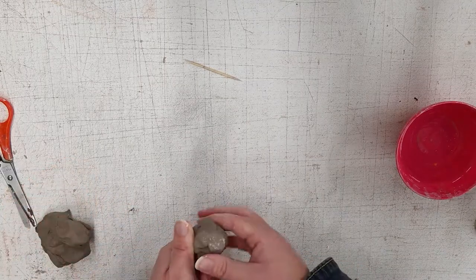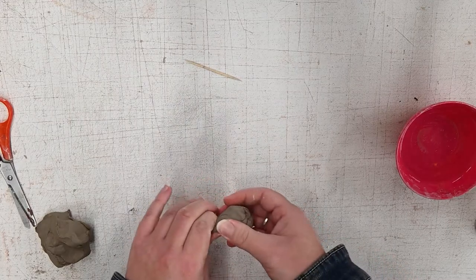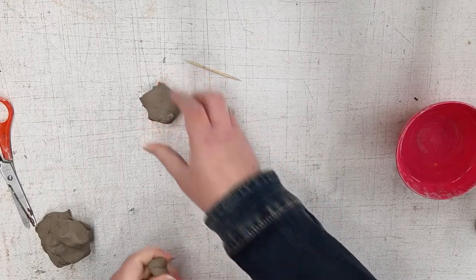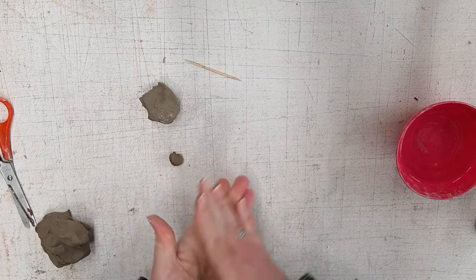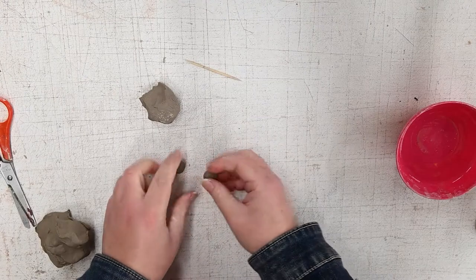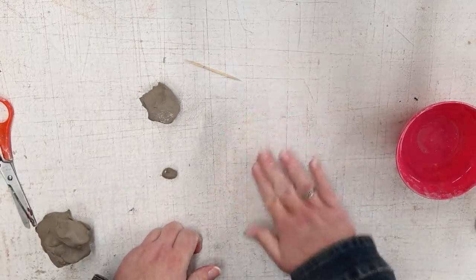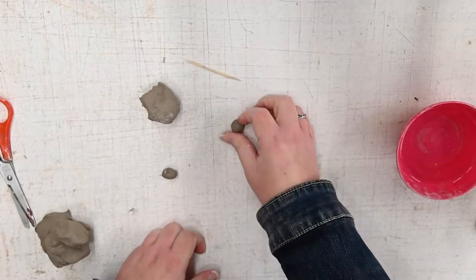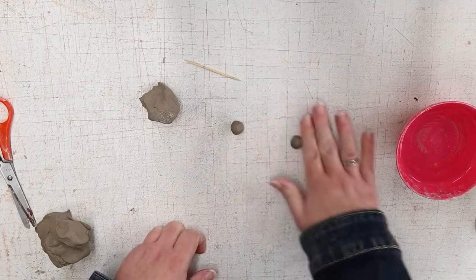And then we're going to take some of our remaining clay to work on details. So you can make fangs or eyes or spikes and add them to your monster. So to make our eyes, we're going to take a little bit of clay and we're going to roll it into a tiny ball. And then I'm going to make two eyes for my monster. So I'm going to roll two balls, but you can make as many as you like.